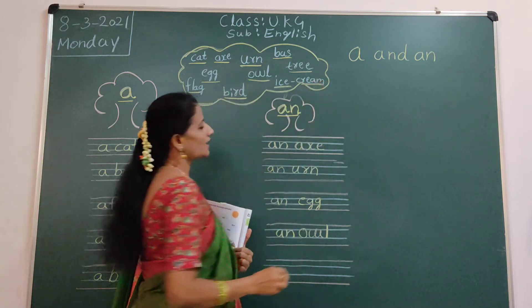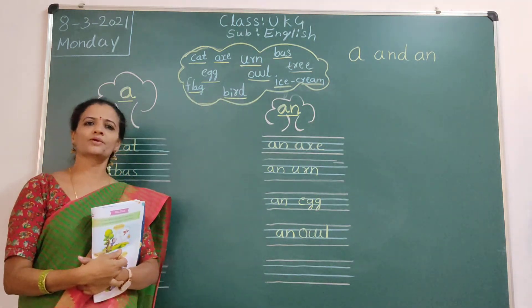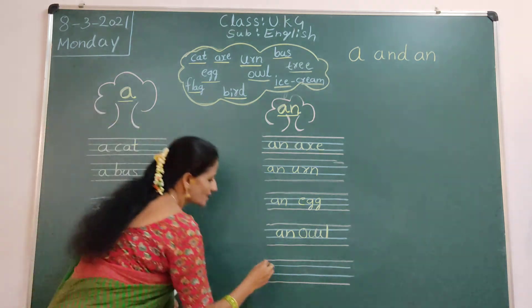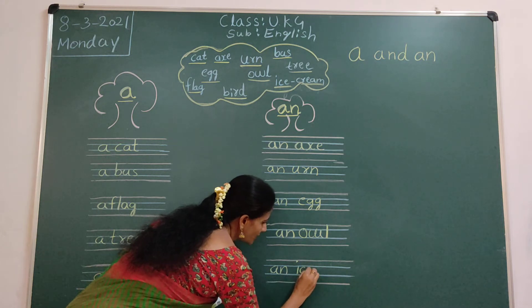Next. Last word. Ice cream. So, I is a vowel sound. We will use An. Okay children. A, N. An. An. Ice cream. Ice cream.